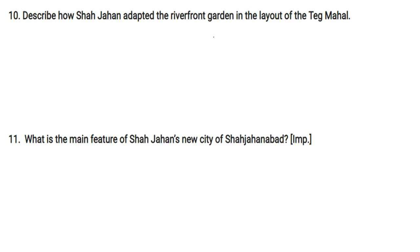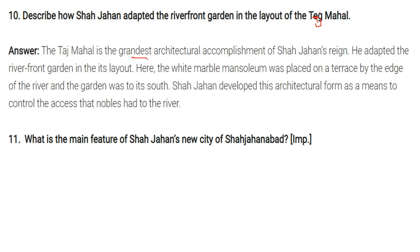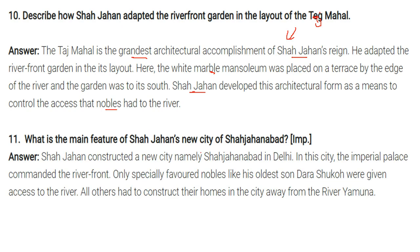The Taj Mahal is the grandest architectural accomplishment of Shah Jahan's reign. Shah Jahan adapted the riverfront garden in its layout: the white marble mausoleum was placed on a terrace at the edge of the river, and the garden was to its south. Shah Jahan developed this architectural form as a means to control the access that nobles had to the river. In his new city, Shahjahanabad in Delhi, the imperial palace commanded the riverfront, and only specially favored nobles like his eldest son Dara Shikoh were given access to the river; all others had to construct their homes in the city away from the Yamuna.